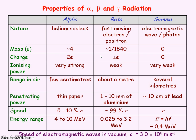And the charge of a beta positive particle would be plus e. And a gamma ray has no charge.